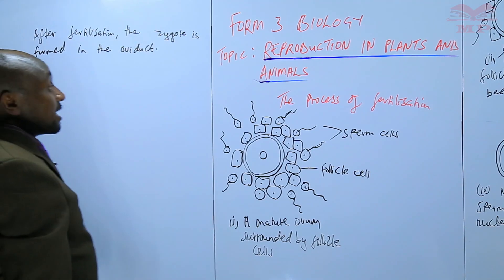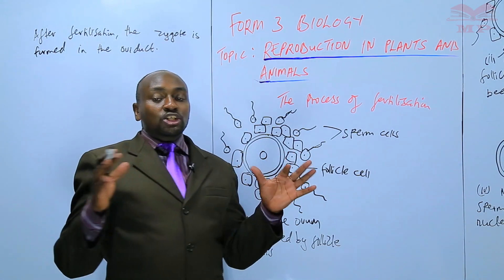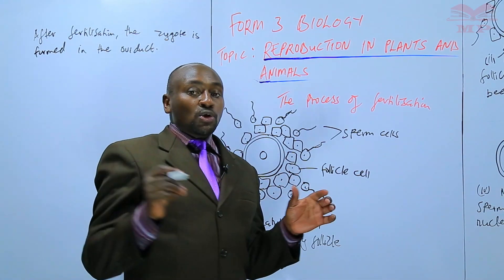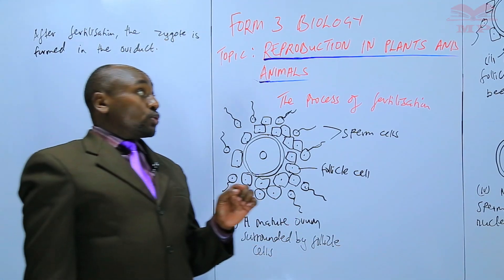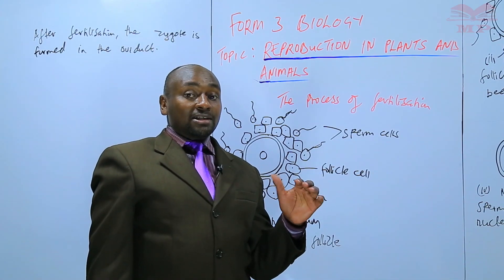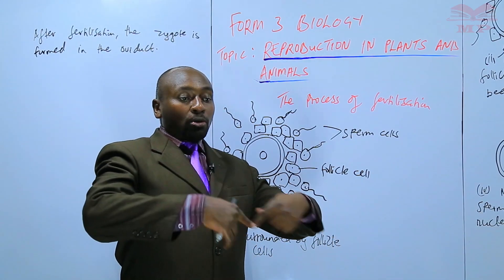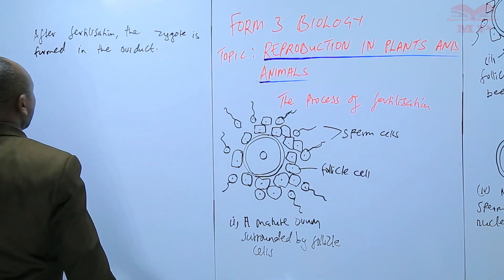This zygote moves towards the uterus by the contraction and relaxation of the smooth muscles of the oviduct. Also, the oviduct is lined with cilia, hair-like structures that help to propel this zygote towards the uterus.